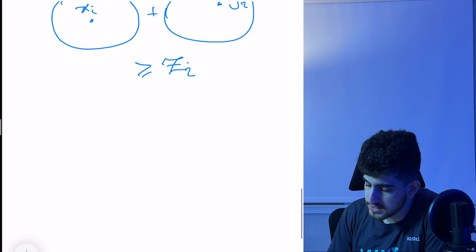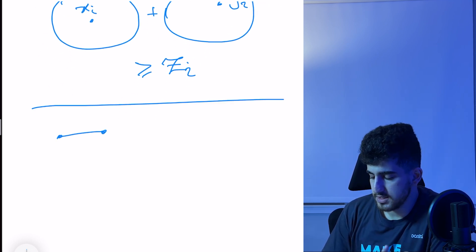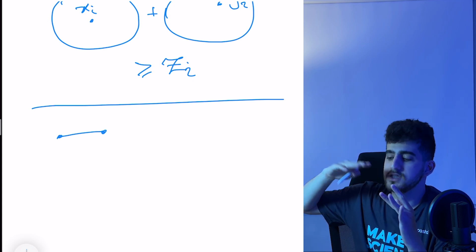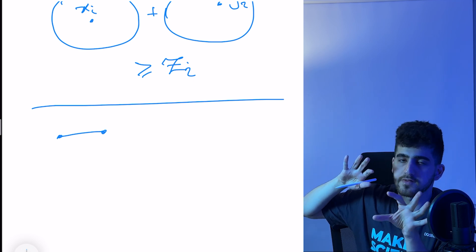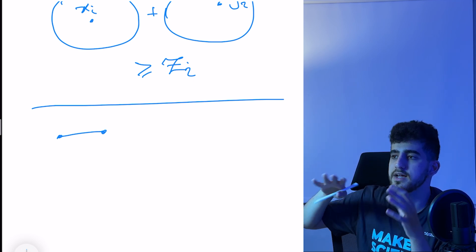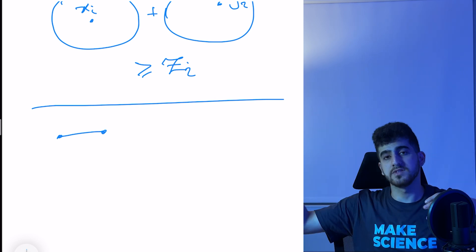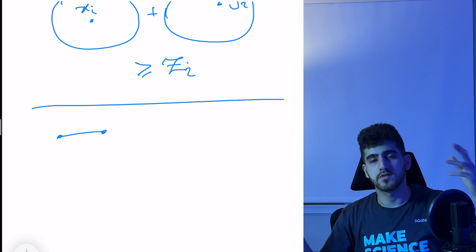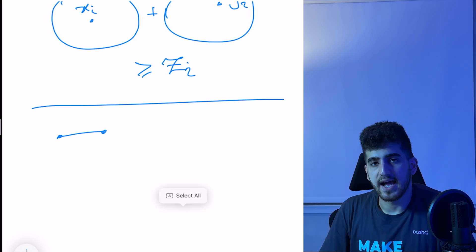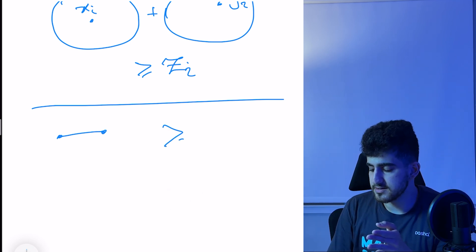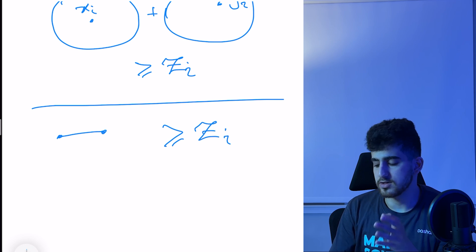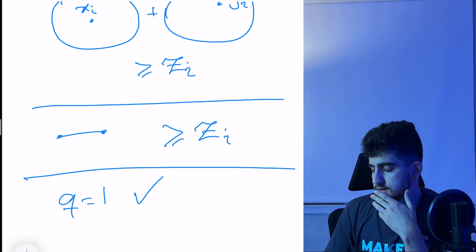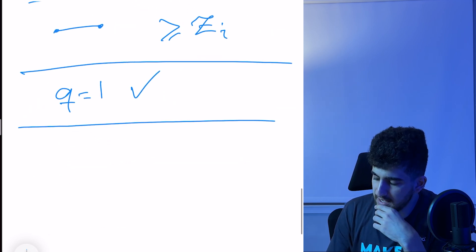Alternatively, we can add edges one by one. After each addition, we check the connected components of X and Y. If they are in the same component we compare that size with Z_i; if different, we compare the sum with Z_i. The first time this value is greater than or equal to Z_i, that is our answer. So the Q=1 case is solved.